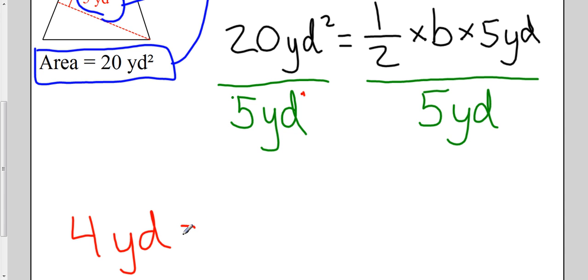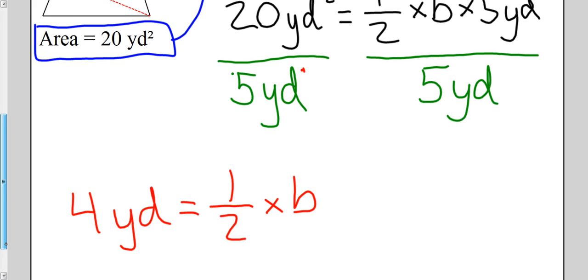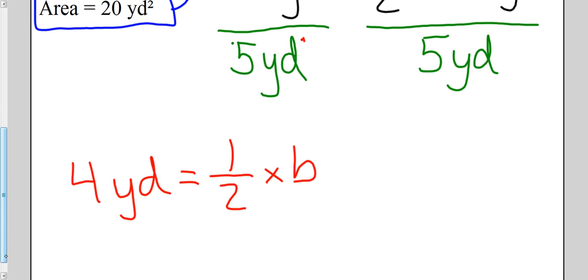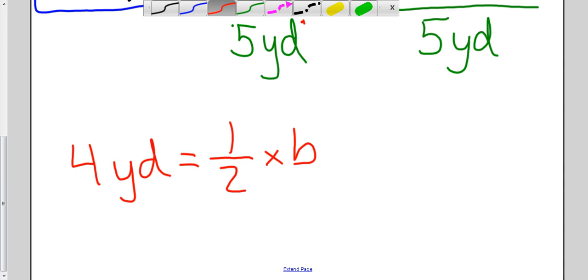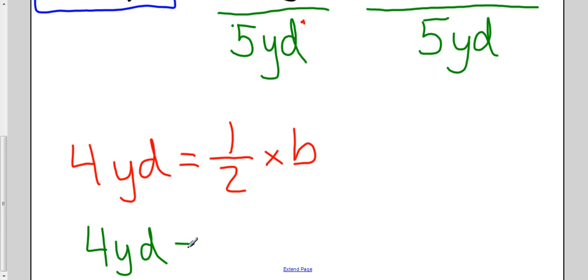And that is equal to one half times b. So what is this? I have one half times b. I could actually further simplify this. I could say, well, there's a couple ways I can do this. We're going to do it this way. I say four yards is equal to, if I take a half b, that's the same thing as saying b over two. Okay, b times one over two.